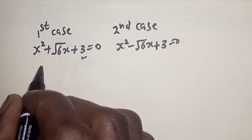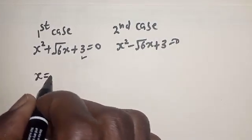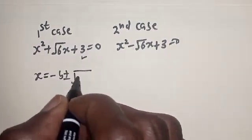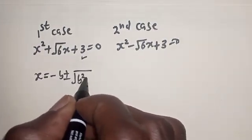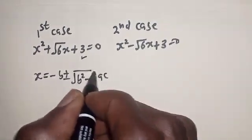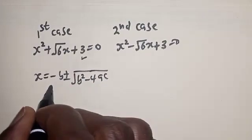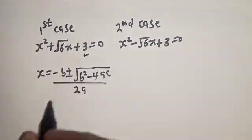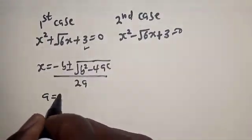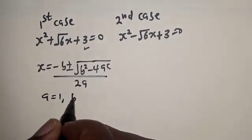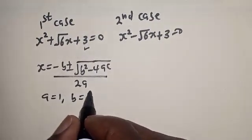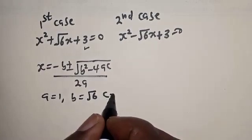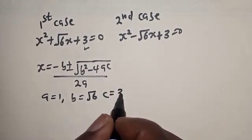The quadratic formula is x equals minus b plus or minus square root of b squared minus 4ac, all over 2a. From the first case, a equals 1, b equals root 6, and c equals 3.